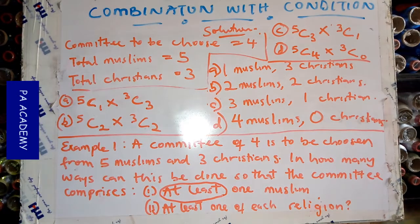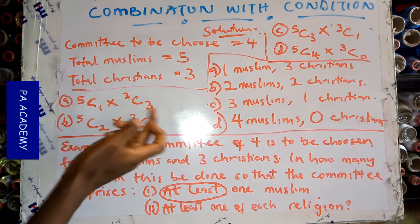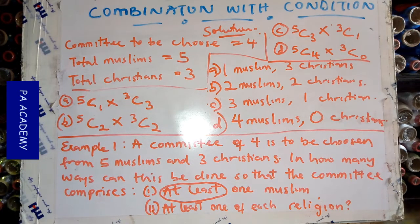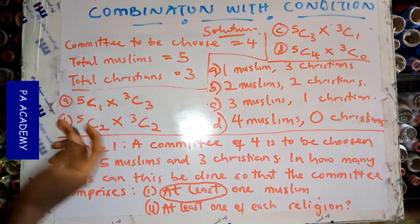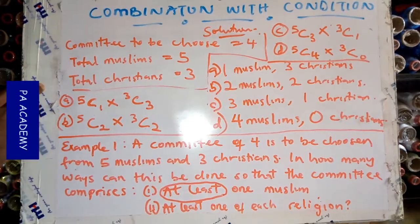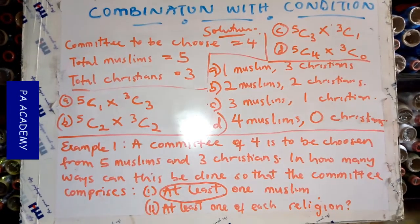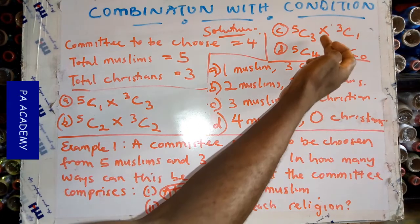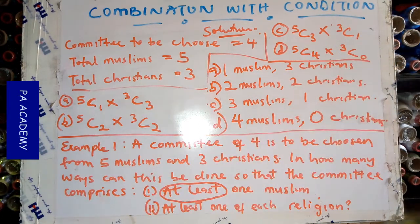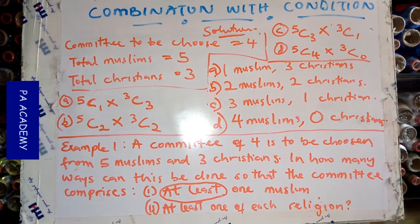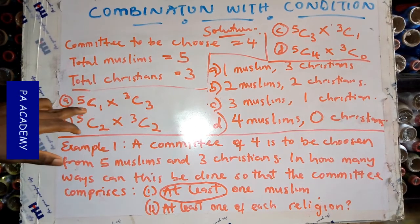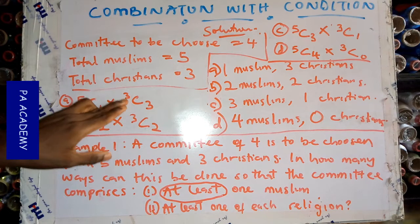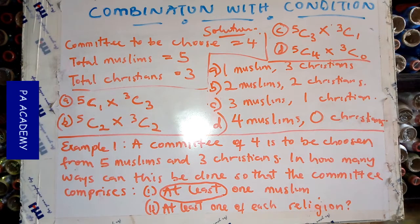Notice that in each of the four cases A, B, C, D, the numbers in the subscripts add up to four. This is a good check that you are correct: 1+3=4, 2+2=4, 3+1=4, 4+0=4. These are the four possible ways to choose a committee of four. Now we evaluate all these combinations using the formula nCr = n! / [(n−r)! × r!].